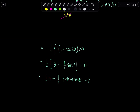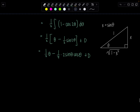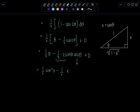It's triangle time again. We let x equal sine theta, so sine of theta equals x — the ratio of opposite over hypotenuse. This is the exact same triangle from earlier, just with theta instead of t. So theta is sine inverse of x, sine theta is x, and cosine theta is adjacent over hypotenuse — square root of 1 minus x squared. So the trig sub integral evaluates to 1 half sine inverse of x minus 1 half x times square root of 1 minus x squared.